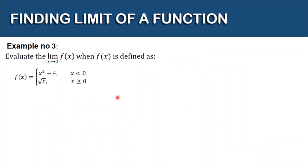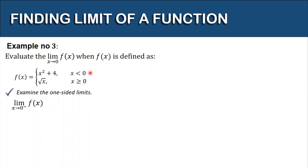Let's have our third example: evaluate the limit of f of x as x approaches 0, where f of x is a piecewise function. The first part is when x is less than 0, the function f of x equals x squared plus 4; the other part is when x is greater than or equal to 0, the function is the square root of x. Examining the one-sided limit from the left — since x is less than 0 — we take the limit of x squared plus 4 as x approaches 0, which by substitution gives 0 squared plus 4, equal to 4.